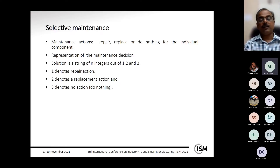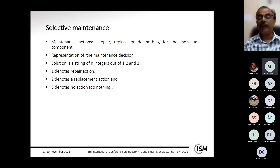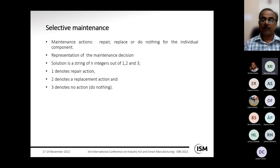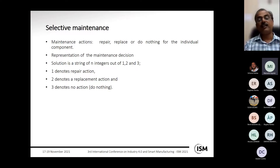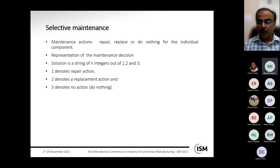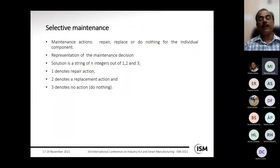For modeling purposes, there are three maintenance actions for each component: repair, replace, or skip. In the simulated annealing implementation, a string of three numbers is used — 1 denotes repair, 2 denotes replacement, and 3 denotes no action (do nothing). For a multi-component system with N components, the maintenance decision is represented as a string of these numbers.